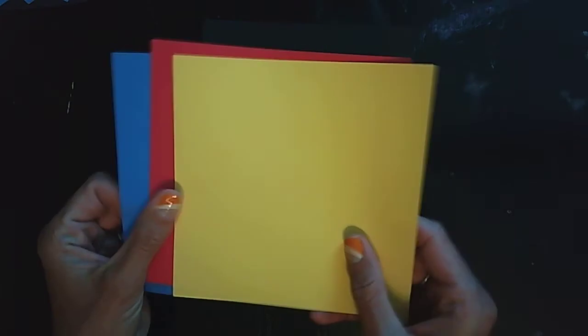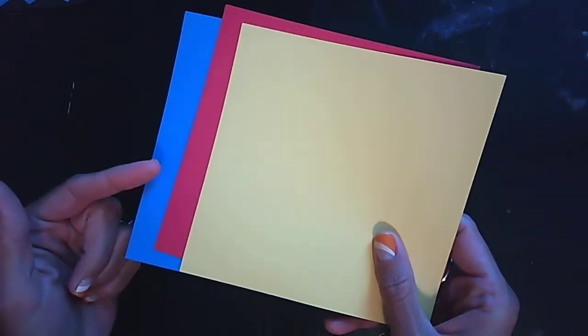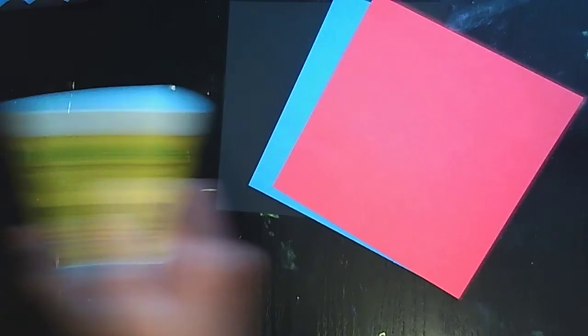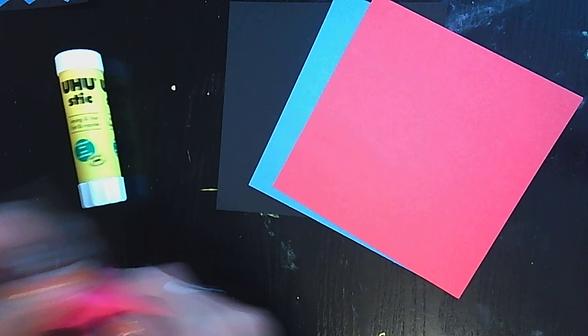You need to pick two colors to work with. Right here I have three but I'm going to choose two. I'm going to choose the red and the blue, so I'm going to put them to the side. You're going to need a glue stick and a pair of scissors.